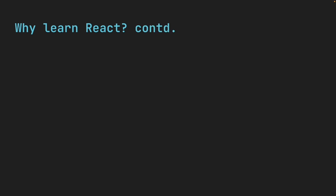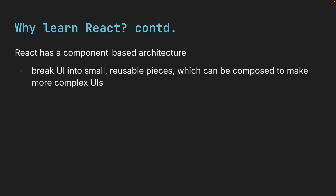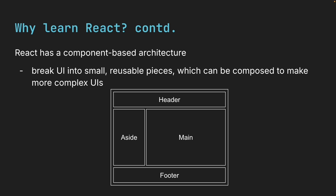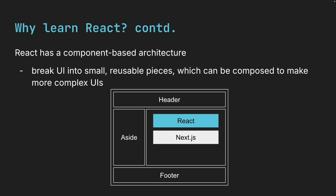But let me also explain the technical reasons why React is so popular. First, React has a component-based architecture. This means you break your UI into small, reusable pieces, which can then be composed to make more complex UIs. Think about a traditional website — you can break it down into sections like a header at the top, a site navigation menu, the main content area, and a footer at the bottom. Each of these sections is a component that you can compose together to create the complete website. But the real power comes from reusability. For instance, you could create an article component that displays content about React. That same component can then be reused to show articles about Next.js or TypeScript just by passing in different data. For large enterprise applications, this ability to reuse components is massive.